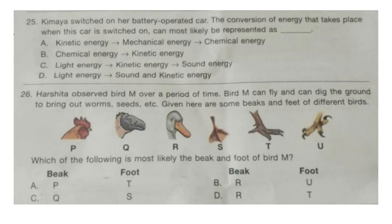Question 25. Kimaya switched on her battery-operated car. The conversion of energy that takes place when this car is switched on can most likely be represented as dash. Look at the options and select your answer. The correct answer will be option B: chemical energy to kinetic energy.